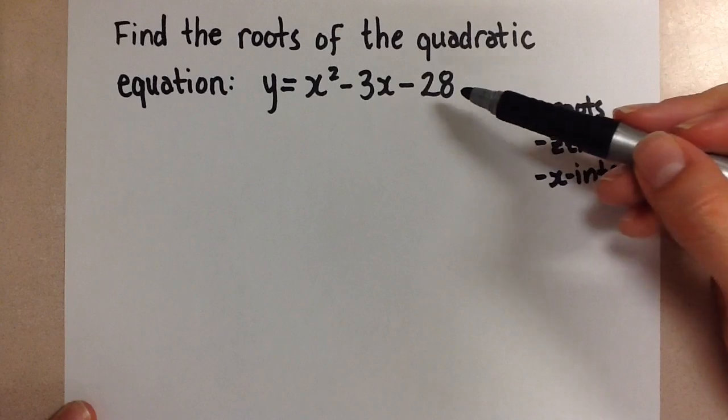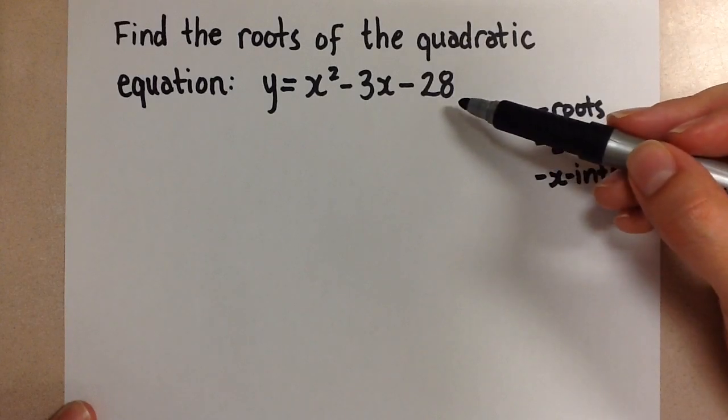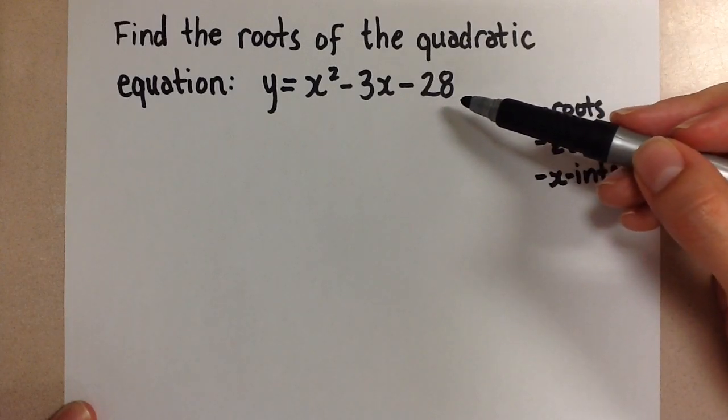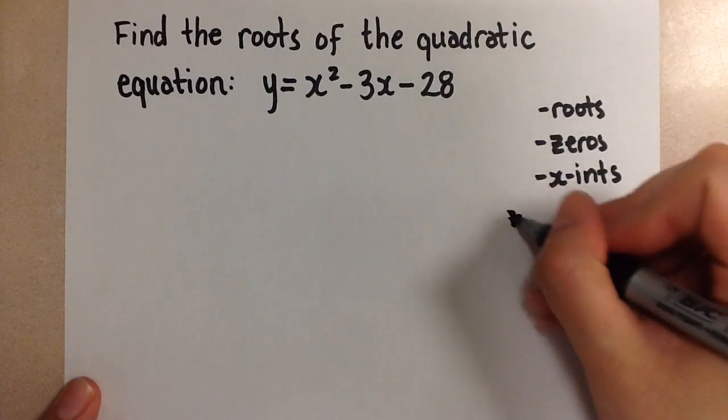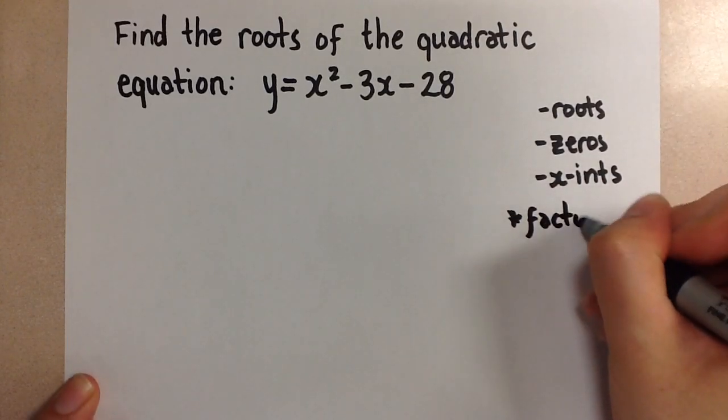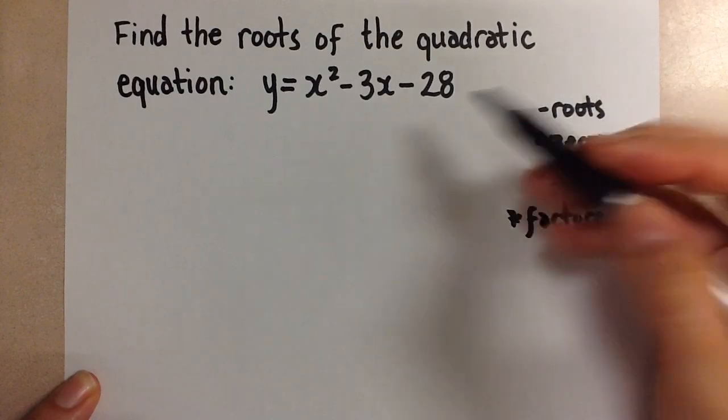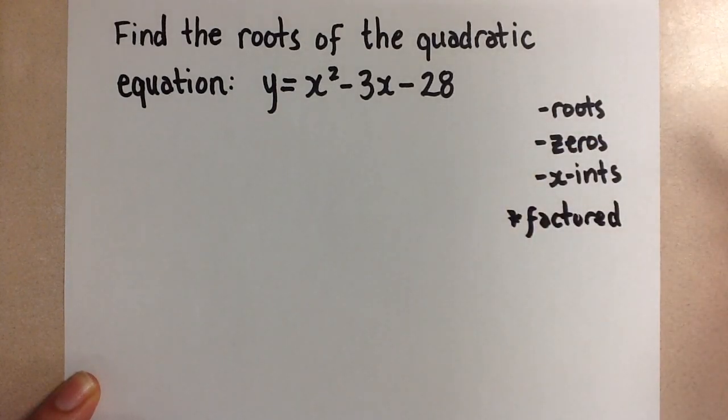In order to do that, we need to take this quadratic equation, which is in standard form, and we need to put it into factored form. So we have to change this to factored form. To do that, we need to factor this trinomial.